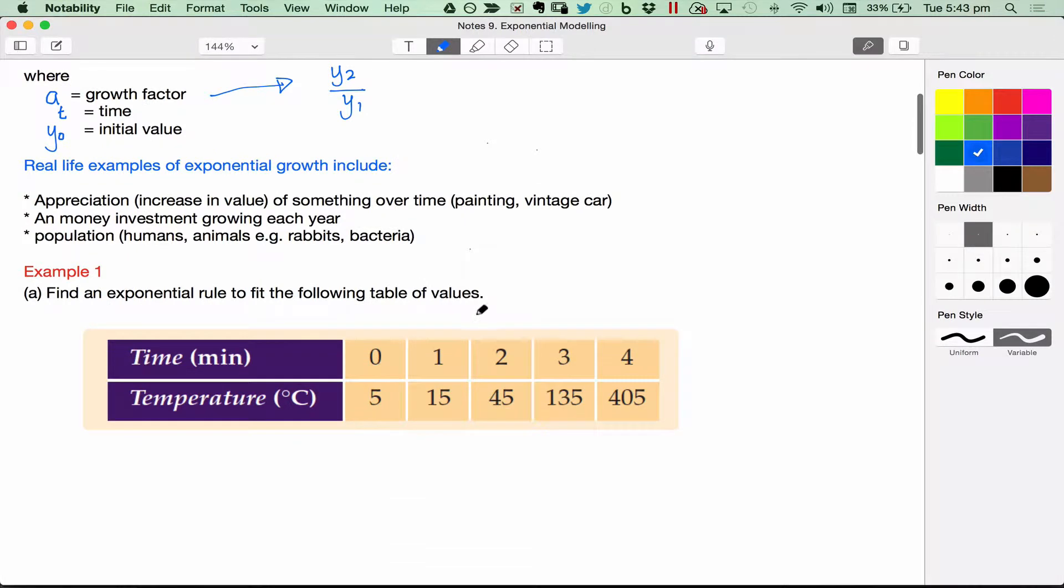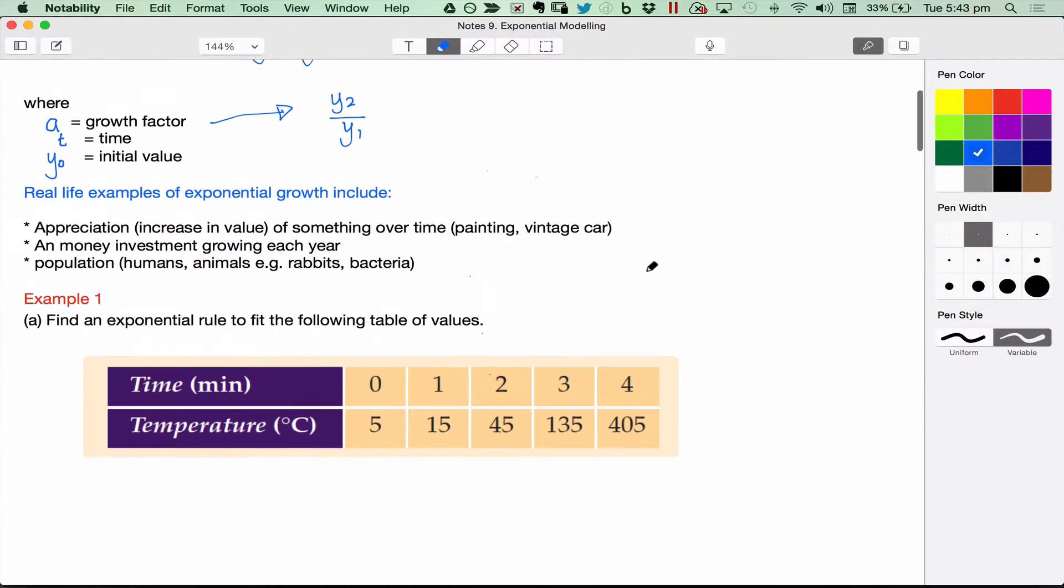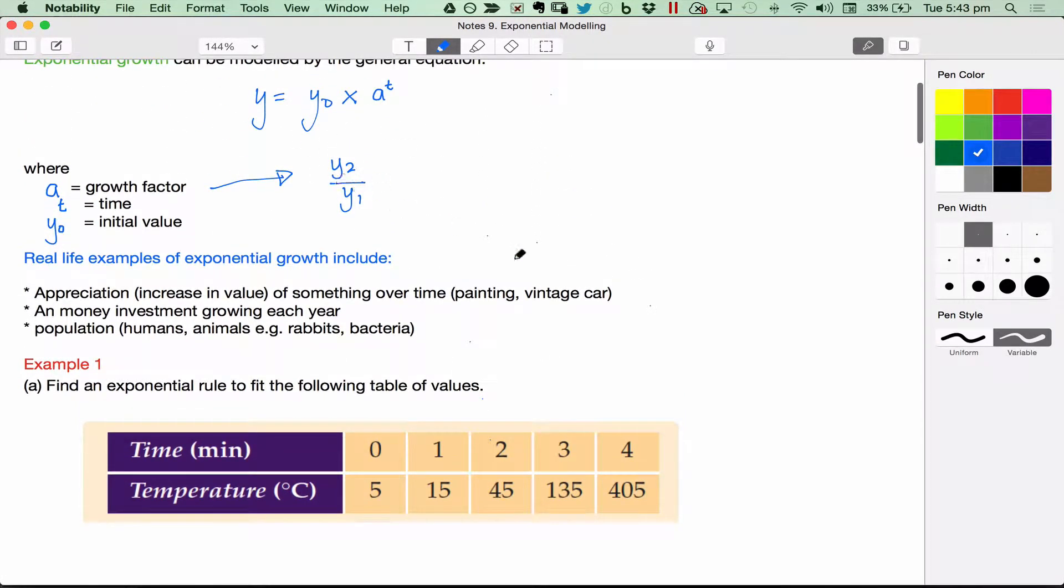So our first example here, I've got something increasing in temperature over time. And the question says, find an exponential rule to fit the following table of values. You might like to pause and have a go at using this equation up here. Otherwise, you can continue to watch.